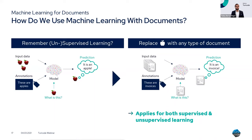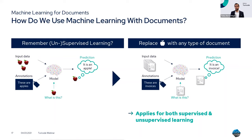How do we use machine learning with documents? Just as in the supervised learning example where we gave the system labeled apples, we simply replace the apples with documents. This applies for both supervised and unsupervised learning. The interesting thing with documents is that unlike images of apples, you not only have the image layer but can go much more in depth — we'll show you that later on.